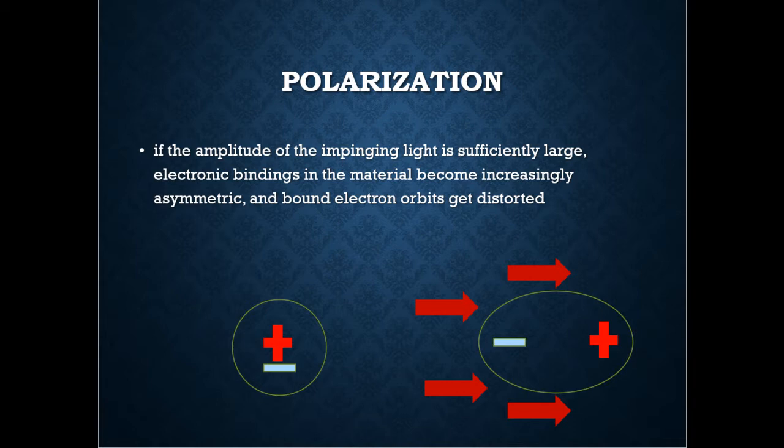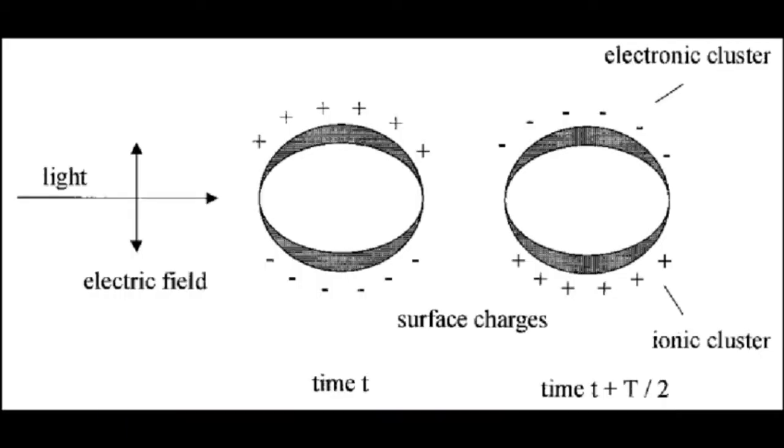We know that positive charges move along the electric field and negative charges move away from the electric field. If the electric field is strong enough the electron clouds in the atoms get distorted. This in turn causes a dipole moment to generate inside the material. We say now that the material is polarized.